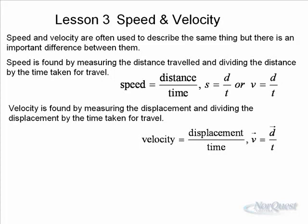Now, you can see that we have drawn a little arrow above the v in the velocity equation. The arrow indicates direction. Notice that in the speed equation, there is no arrow.